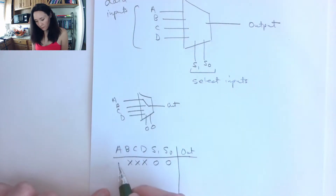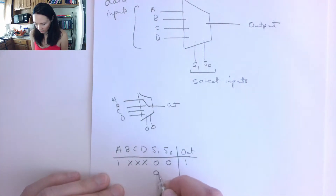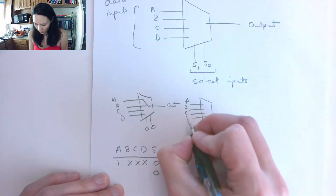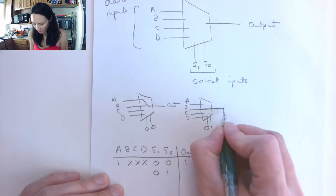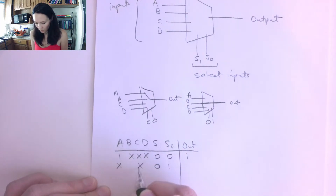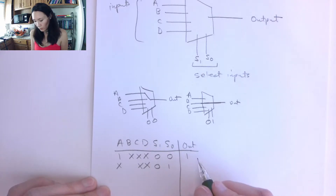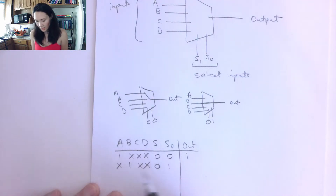The next case is when we have S1=0, S0=1 coming in on the select lines. This is going to select our B input, so B is the input that gets selected and piped directly to the output. That means we no longer care what's coming in on A, we don't care about C, and we don't care about D. When we make our function from the truth table, we care about where the output equals one, so we can skip the case when B is zero — we're going to have a one when B is equal to one.